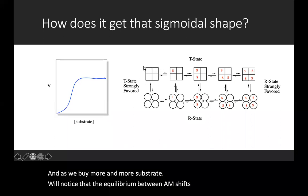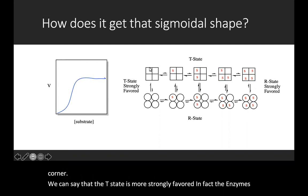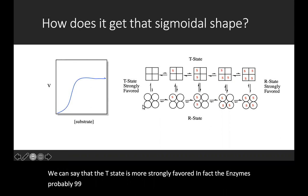In this upper left-hand corner, we can say that the T state is more strongly favored. In fact, the enzyme is probably 99% T and 1% R.